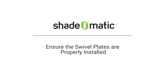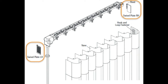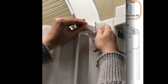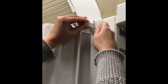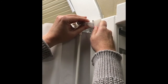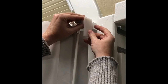The first step is to ensure the swivel plates have been properly installed onto the headrail. You will notice there's a right and left hand swivel plate. Regardless of the control side, the right hand swivel plate will always be installed on the right hand side of the headrail, and the left hand swivel plate on the left. In this example, the controls are on the right, and we're installing the right hand swivel plate.